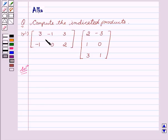Our first matrix is 3, minus 1, 3, minus 1, 0, 2. And our second matrix is 2, minus 3, 1, 0, 3, 1.